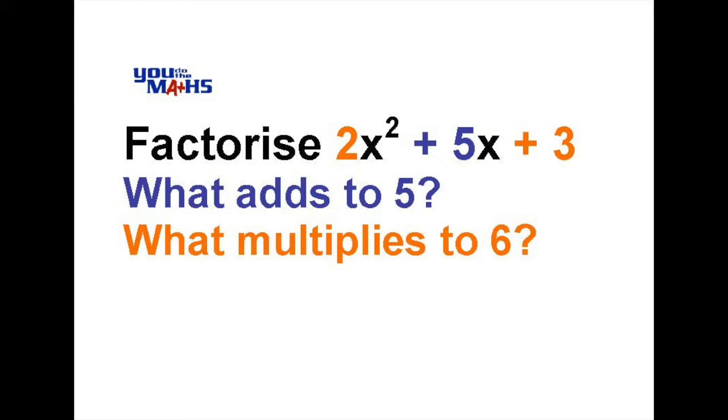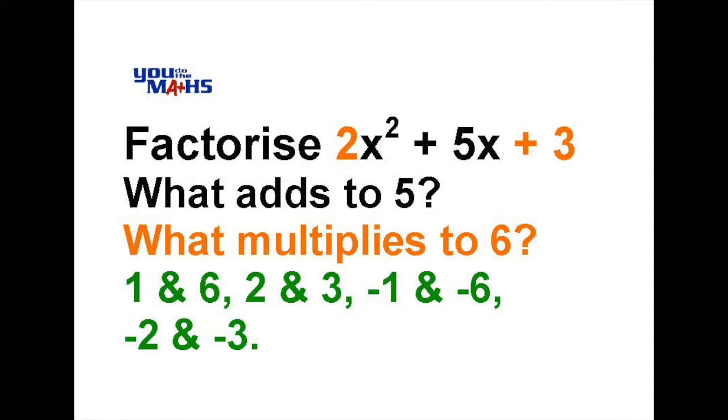Numbers which multiply to 6 are probably easiest to consider first. There's four pairs: 1 and 6, 2 and 3, negative 1 and negative 6, and negative 2 and negative 3. We could have saved time because the only way two numbers can multiply to a positive 6 and add up to a positive 5 is if they're both positive. Going through the list, 2 and 3 are the only two numbers that satisfy this.